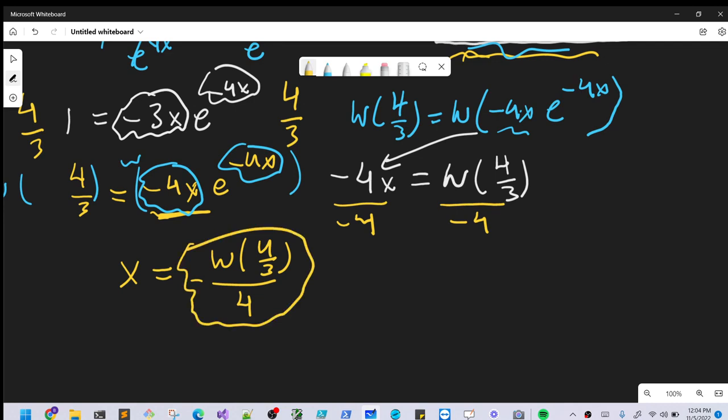We want to know, is that going to be a real solution? Are there other real solutions? So let's look at this. The input here on the Lambert W is 4 thirds, which is about 1.333.